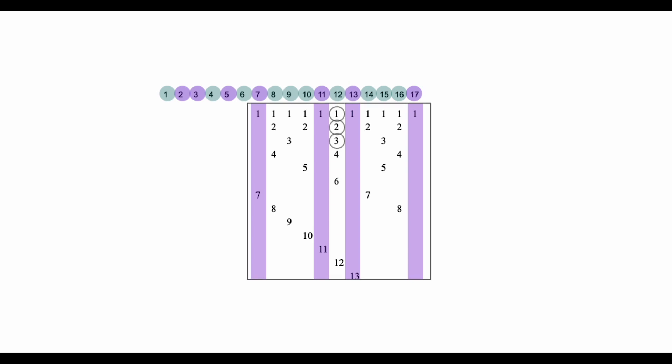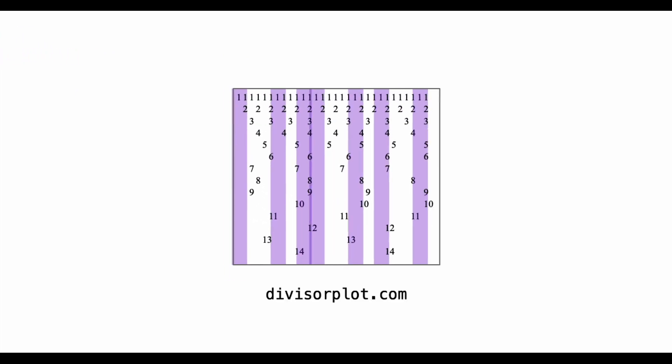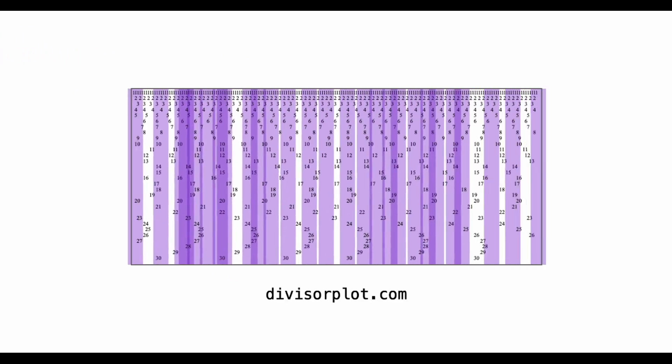It has 1, 2, 3, 4, 6, and 12 as its divisors. It's flanked by twin primes, 11 and 13. We can see a symmetrical pattern here that looks the same for all twin primes. But this is just one interesting pattern. There are many more prime number patterns worth exploring.